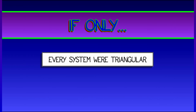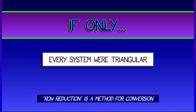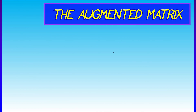Triangular systems are great, but sadly, not every system is triangular. Here's what we're going to do: we're going to look at how we can convert to a triangular system. This method is called row reduction, and it's extremely important to solving Ax equals b.